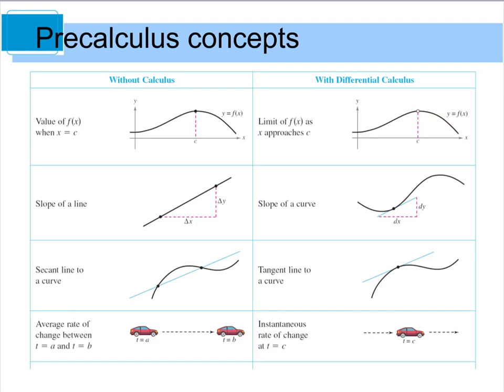Likewise, if you want to find the slope of a secant line to a curve, you can find that without calculus. But if you want to find the slope of that tangent, you need, again, the limit process to help you find the slope of that tangent.